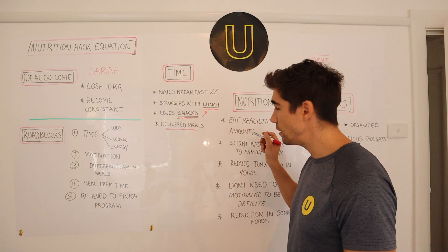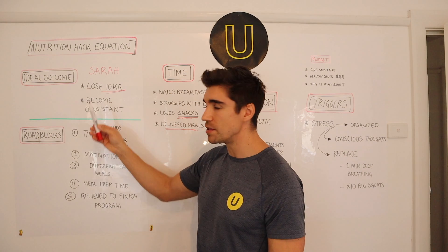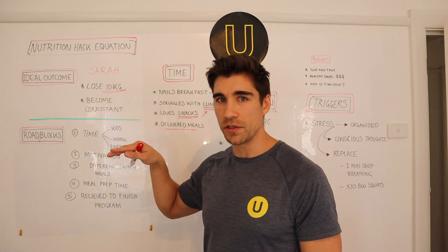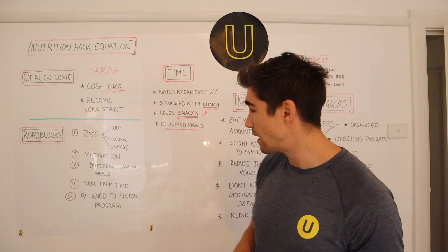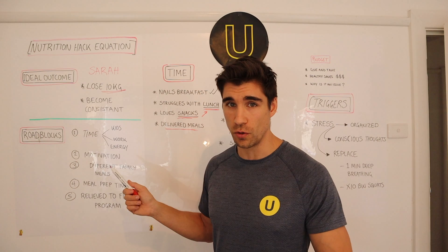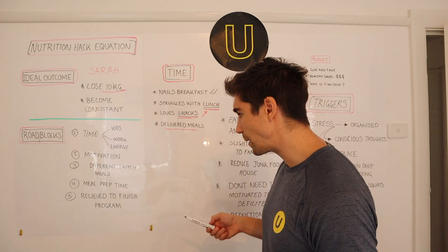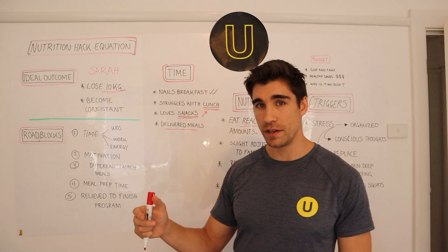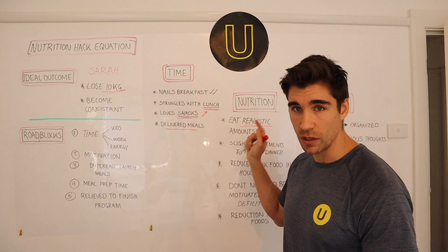Then we'd analyze what her nutrition looked like, and this is the big one — eat realistic amounts. You might have a goal of losing 10 kilos in two months, but most programs put you in such a severe calorie deficit that you're snacking like mad, getting tired, low energy, and starving yourself, which makes it impossible to maintain. That's where the relief to finish the program comes from. Position your meal plan at a realistic calorie deficit suited to your appetite — the weight loss might be slower, but the impact on your energy and life will be far less.